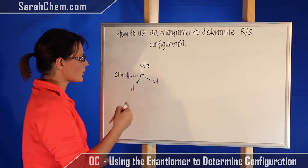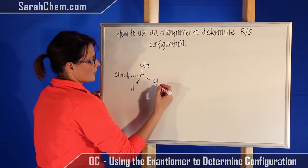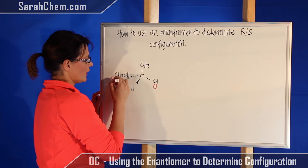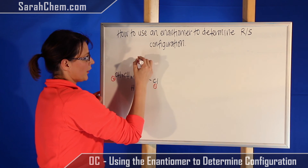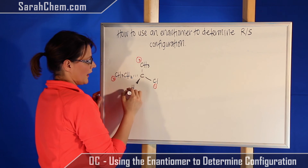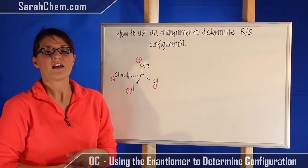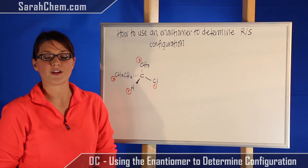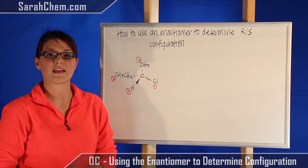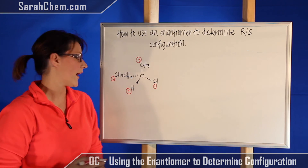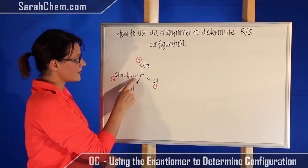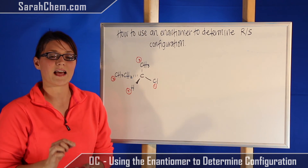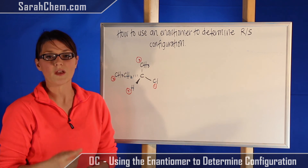So over here what we're going to do is rank our priority. We know that this would be ranked priority one, priority two, priority three, and priority four. The next thing you have to ensure is that the fourth priority group is placed on the hatched wedge, which is this location here. Now if it is not placed in that position, you need to get it there.